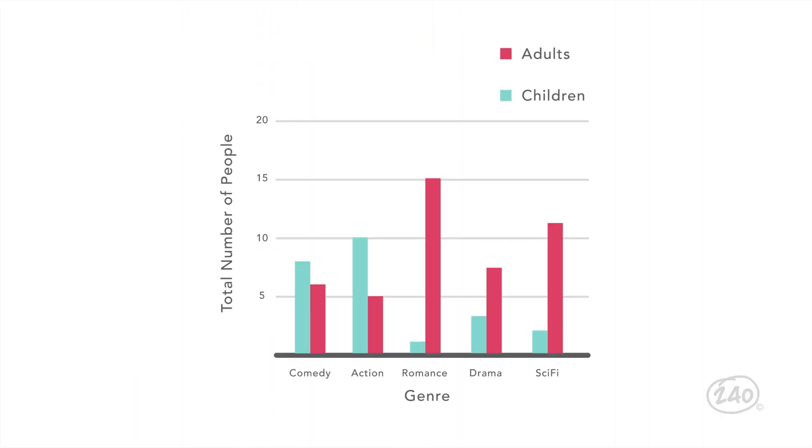For instance, you may be shown a graph like this one and asked, which type of movie is the most popular among children? First, make sure you know what you're looking at, then read the chart. And you might have to use the numbers from the chart to do a simple calculation, but that's it.